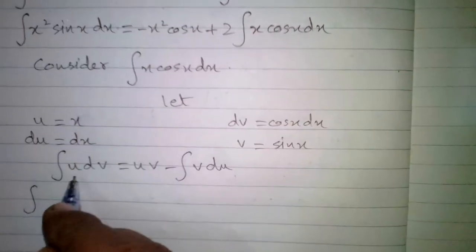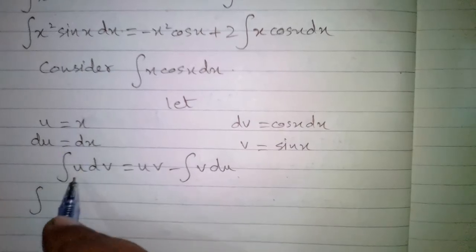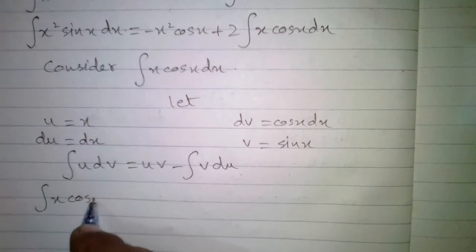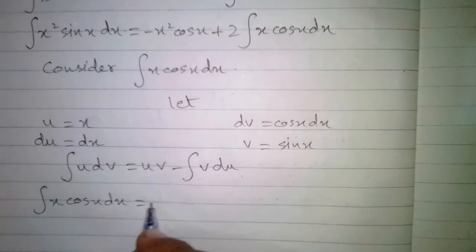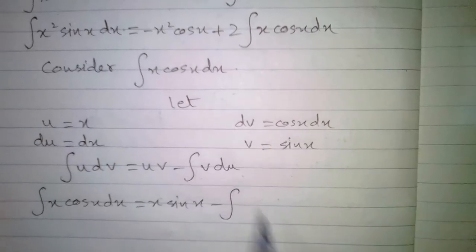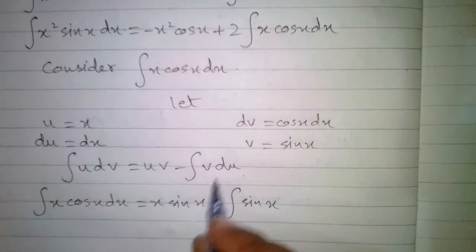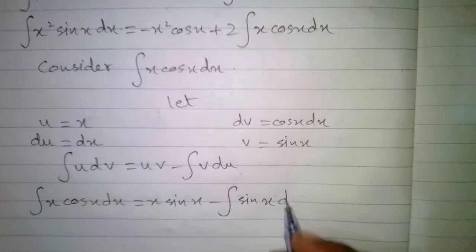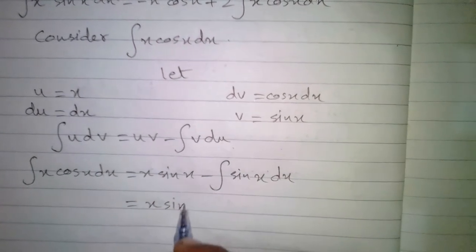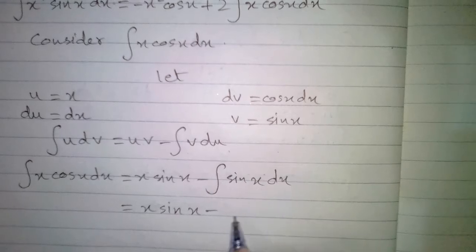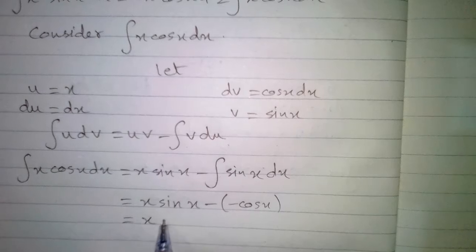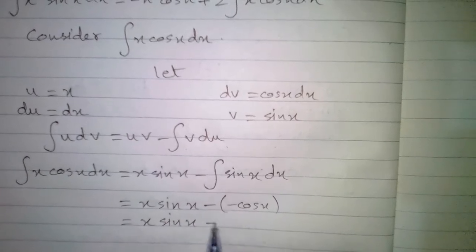Substituting u as x and v as sin x, we get x sin x minus the integral of sin x dx. The integral of sin x is minus cos x, so this becomes x sin x plus cos x.